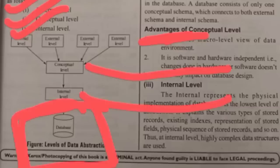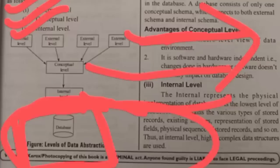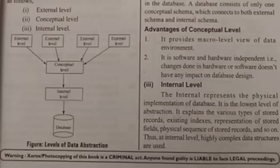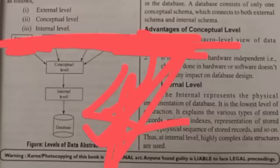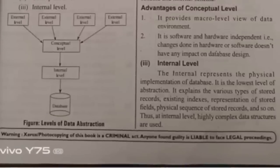The external level is the level at which users interact with the database. For example, Osmania University — when results are out, you will check your results using your hall ticket. You are only at the external level. The DBA is an Osmania University person managing the database, but we as users are only at the external level.